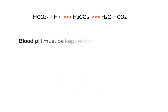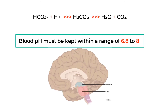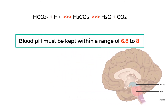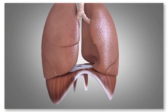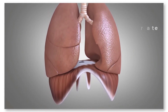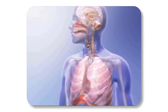Blood pH must be kept within a range of 6.8 to 8, and on average blood pH is around 7.35. Since carbon dioxide levels can directly affect the pH of the blood, the medulla oblongata and the pons monitor both pH and carbon dioxide levels and adjust respiratory rate accordingly to keep blood pH in a safe range. The more common occurrence that threatens blood pH is the large increase in carbon dioxide production that occurs in exercise, requiring respiratory rate to increase to remove carbon dioxide and keep blood from getting too acidic.